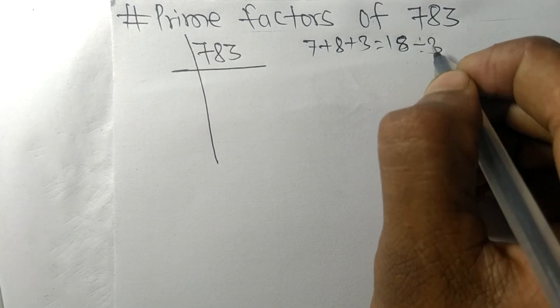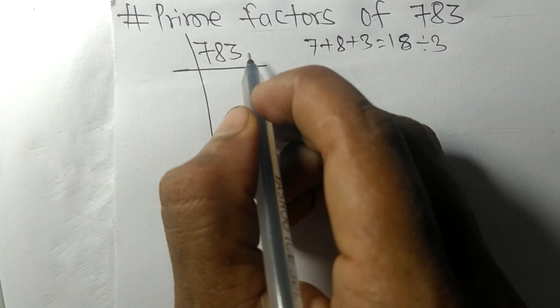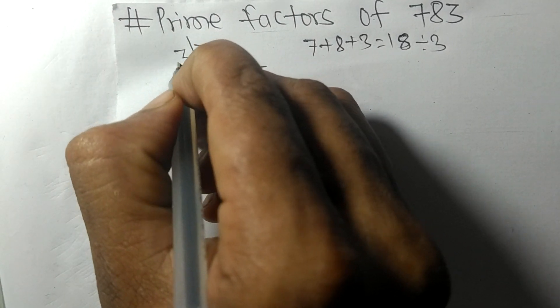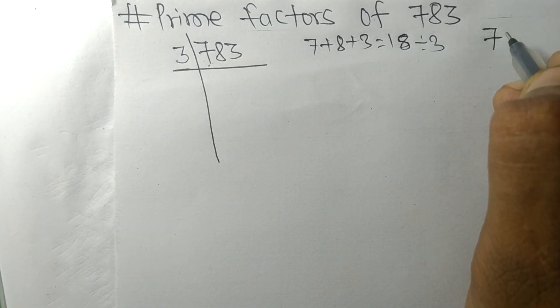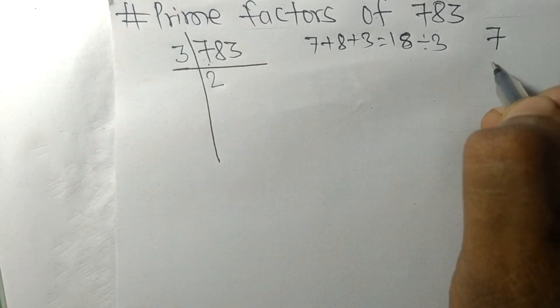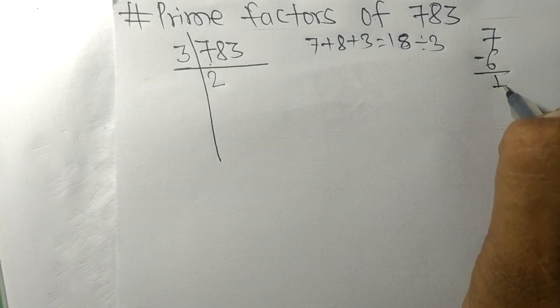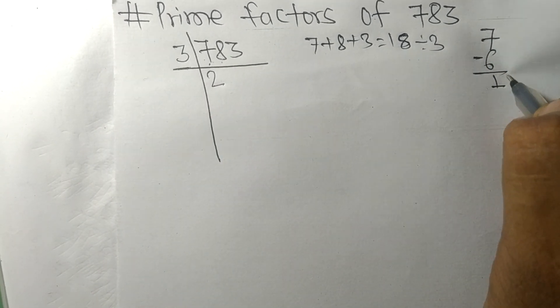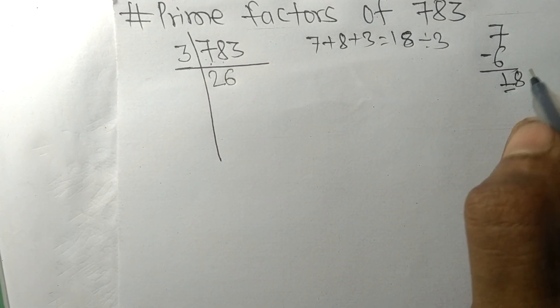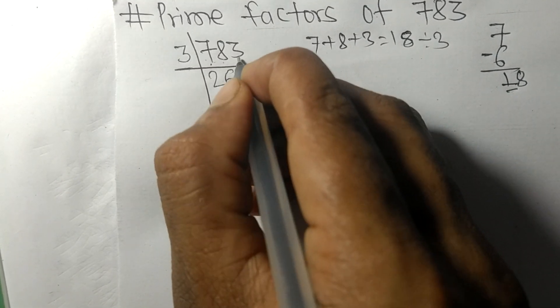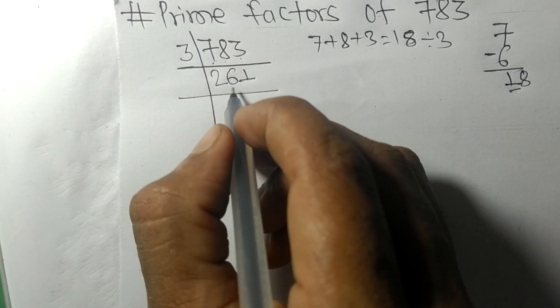So 783 is also divisible by 3. First we have 7, 3 times 2 means 6, on subtracting we get 1. And this 8, 18, 3 times 6 means 18, and 3 times 1 means 3. So now we got 261.